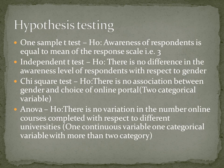For a one-sample t-test, the null hypothesis is: awareness of respondents is equal to the mean of the response scale, that is 3. Since awareness is measured on a 5-point scale, the average of the scale is 3. You can make a one-sample t-test to test whether the awareness level of respondents is equal to 3 or not.